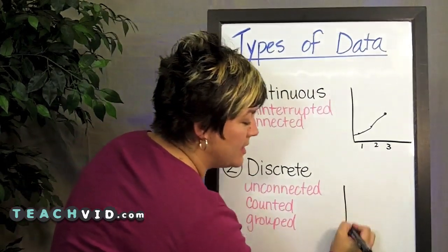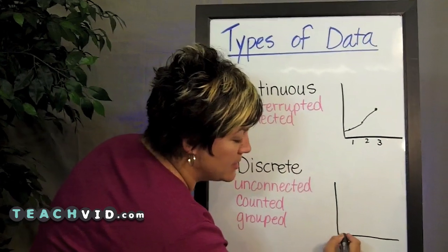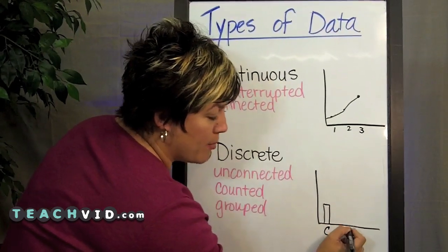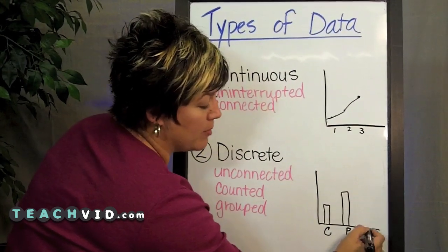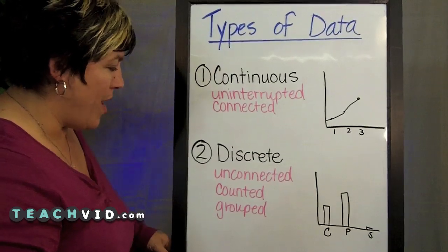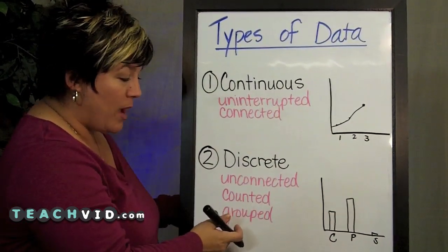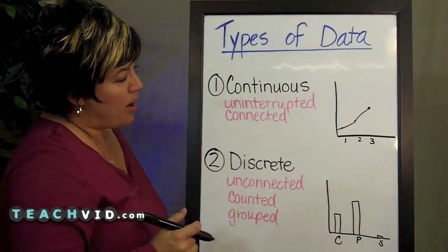The best way to represent this when you graph is with a bar graph. And I might say, well for cheese, I had five students that really liked it. And for pepperoni, maybe I had 10 that liked that and then supreme, perhaps two like that particular one. Each one of these could be counted and grouped in the way of what pizza they liked. So for discrete, you'd like to use a bar graph.